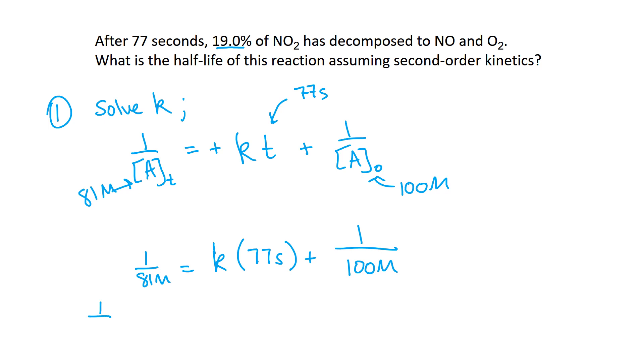So 1 over 81 molar equals K times 77 seconds plus 1 over 100 molar. So 1 over 81 molar minus 1 over 100 molar equals K times 77 seconds. I'm going to divide by 77. And I get a value for K. So I get a K value that is 0.0000305. I look at my units, 1 over molar over second, which is 1 over molar times second, which is my second order unit. So that K value makes sense.